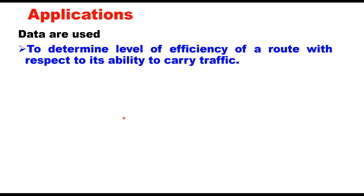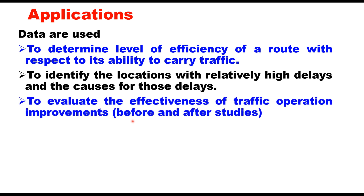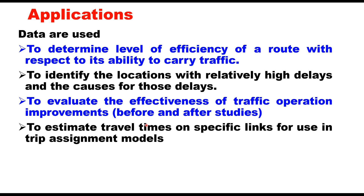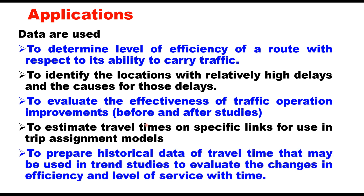There are several applications. Data are used to determine the level of efficiency of a route with respect to its ability to carry traffic, to identify locations with relatively high delays and their causes, and to evaluate the effectiveness of traffic operation improvements through before and after studies. For example, if you pave the shoulders on a highway, how the speed of different vehicle types has changed can be studied through travel time and delay studies. Data are also used to estimate travel times on specific links for trip assignment models and to prepare historical travel time data for trend studies evaluating changes in efficiency and level of service over time.